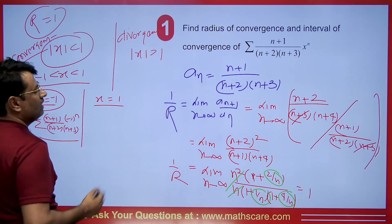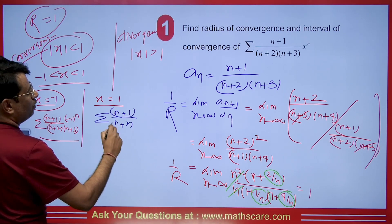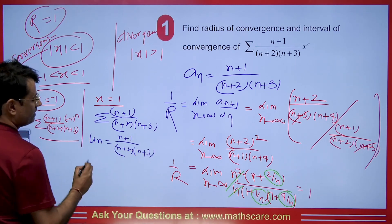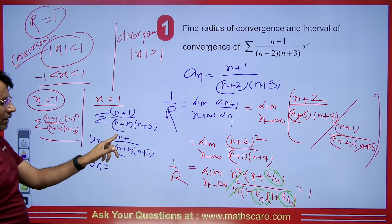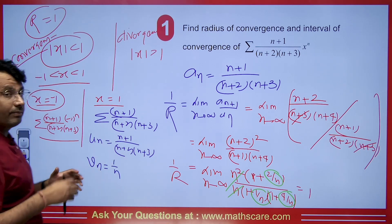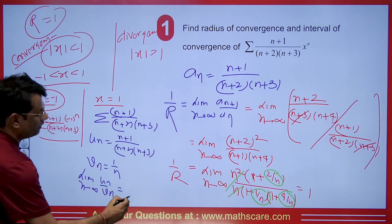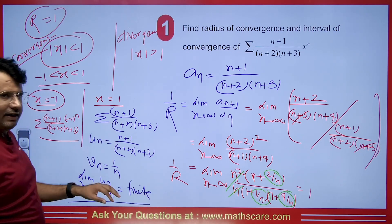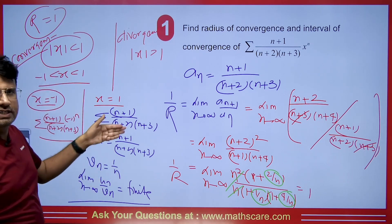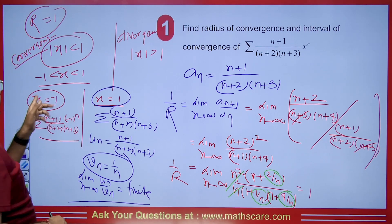Now we check x = 1. The series becomes Σ(n+1)/((n+2)(n+3)). Let uₙ = (n+1)/((n+2)(n+3)) and compare with vₙ = 1/n. Computing lim(n→∞) uₙ/vₙ gives a finite nonzero value (after cancelling n²), so both series behave the same. Since Σ(1/n) is divergent, this series is also divergent at x = 1.